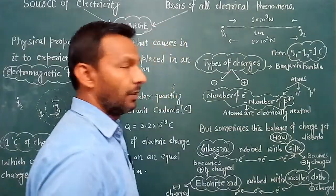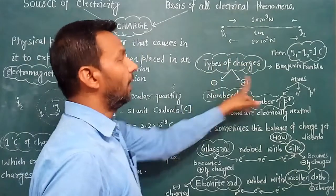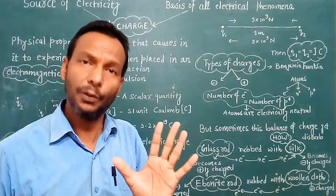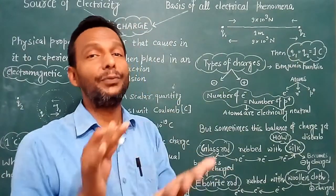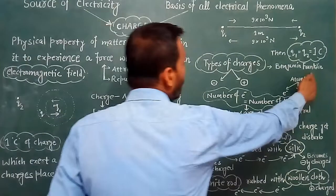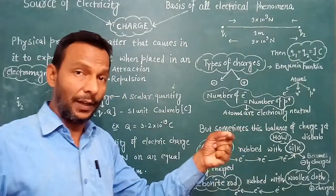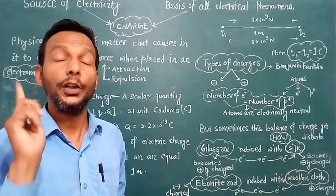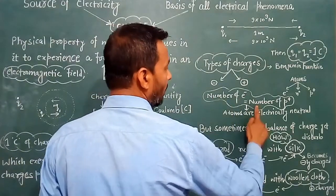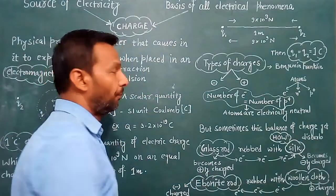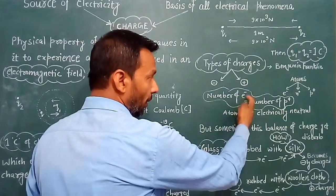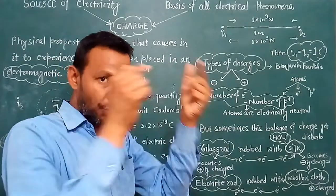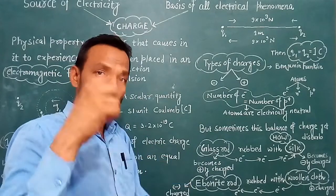Types of charges. Charges are of two types: negative and positive. No other type exists. Benjamin Franklin named them positive and negative. An atom is electrically neutral — it has no net charge — because the number of electrons and protons in an atom are the same. Electrons carry negative charge and protons carry positive charge.